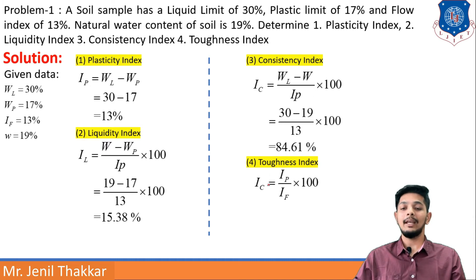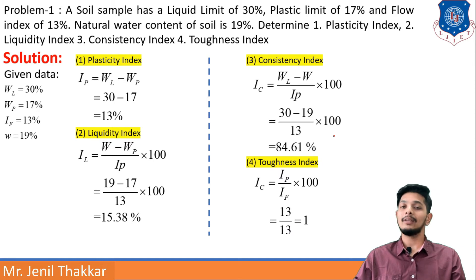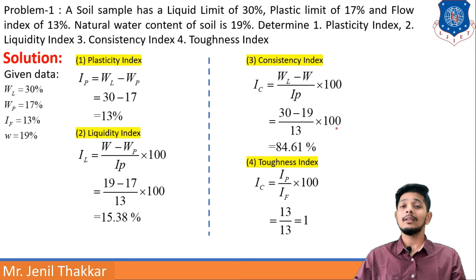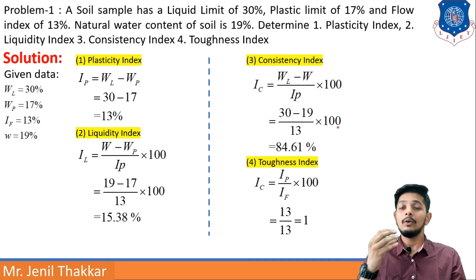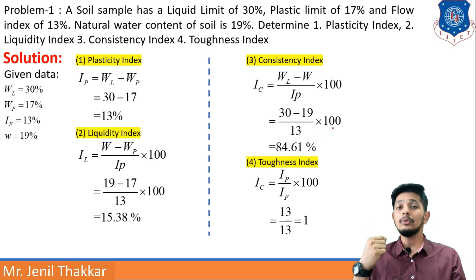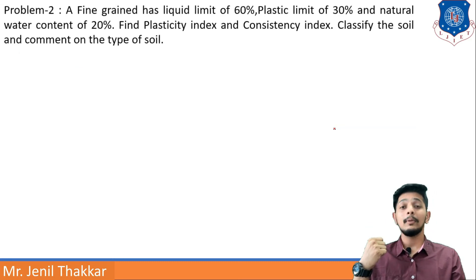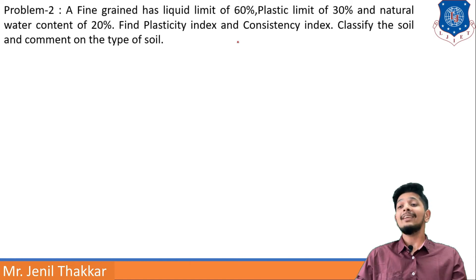Fourth item: toughness index IT = IP / IF × 100. Since both IP and IF are 13, IT comes out as 1. These are standard formulas with no twists in this problem. Let us move to Problem 2.